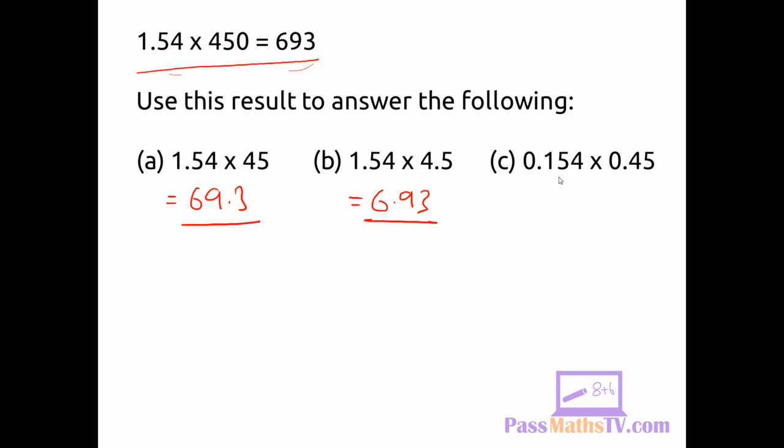In part c, 0.154 is 10 times smaller than 1.54, but 0.45 is a thousand times smaller than 450. Now a thousand times by 10 gives us 10,000. That means our answer has to be 10,000 times smaller than 693.